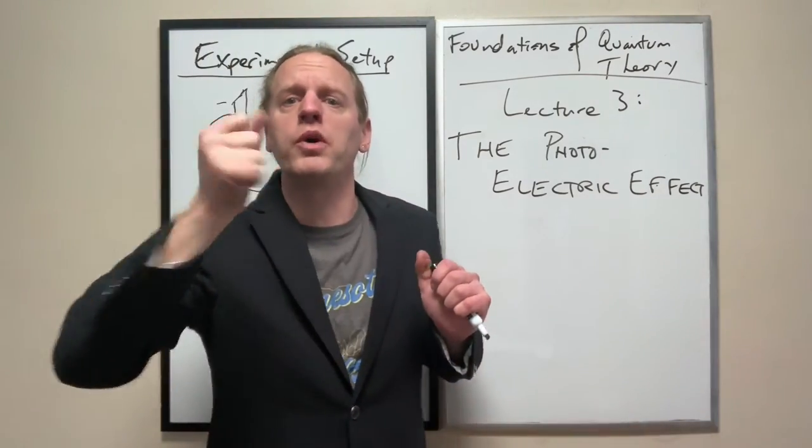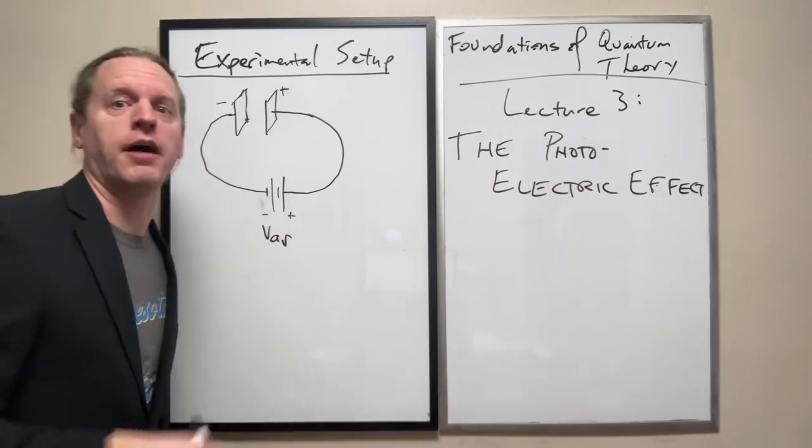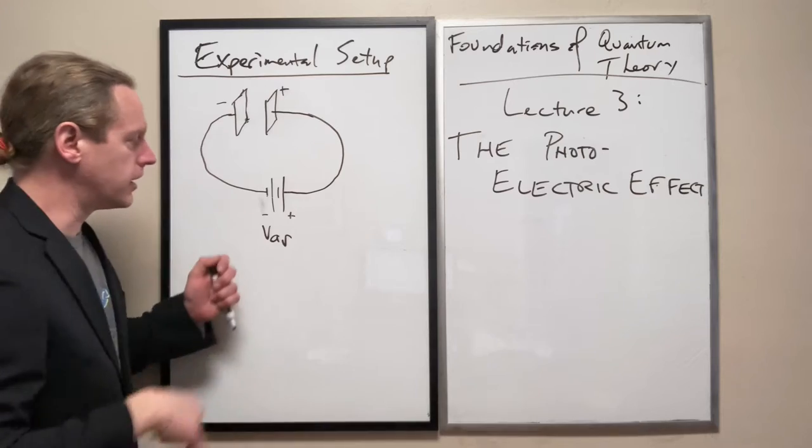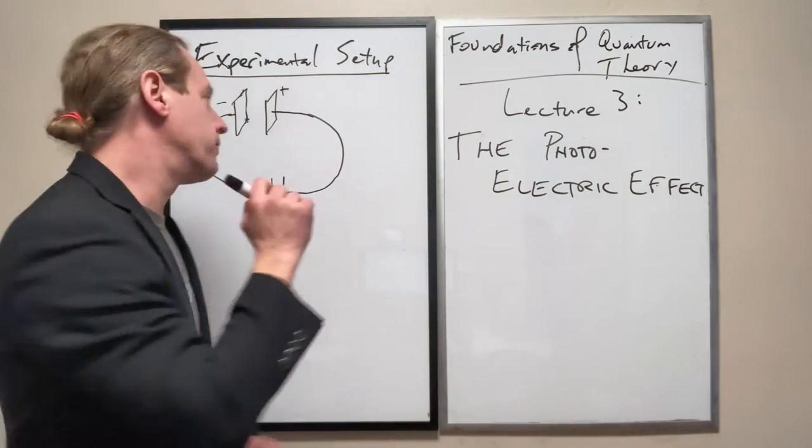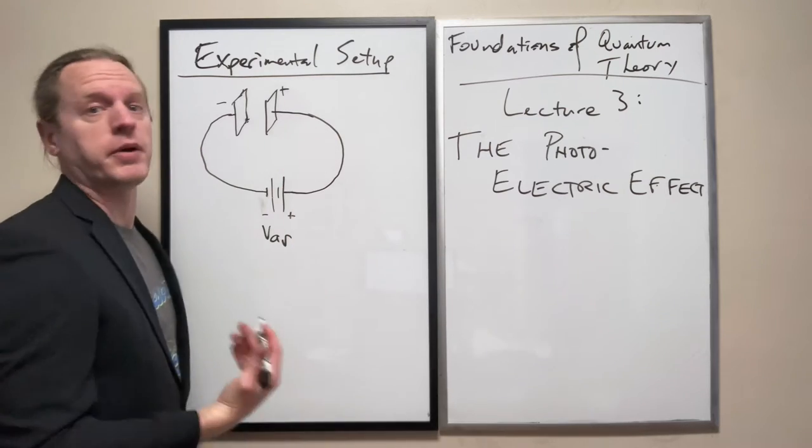This is a variable potentiometer or a variable voltage supply, so we can vary that voltage. In addition to doing that, we can measure, for example, the current through here. So we have an ammeter attached somewhere.